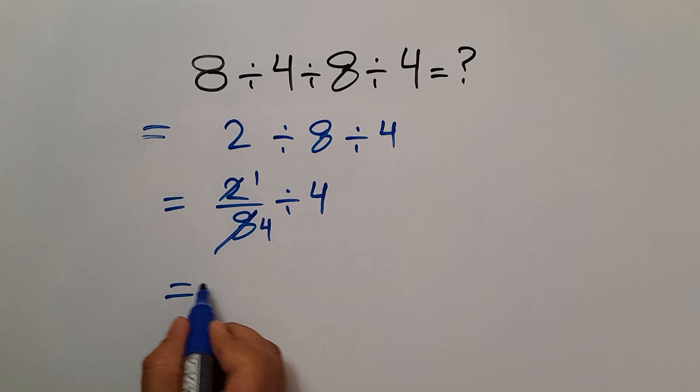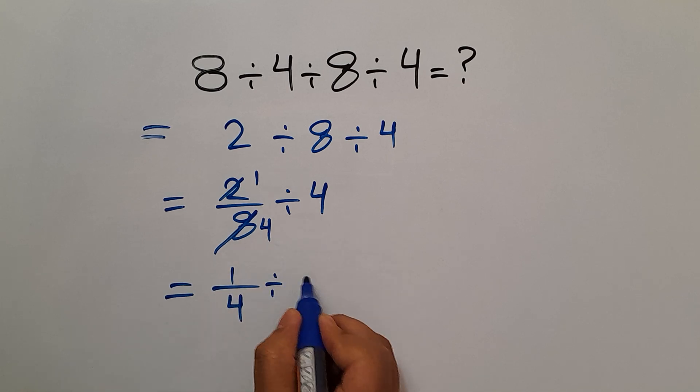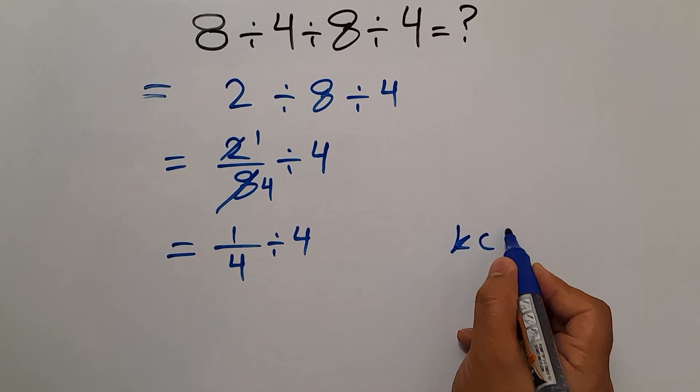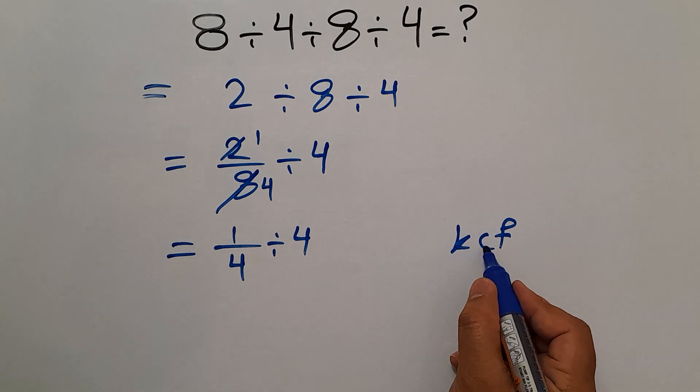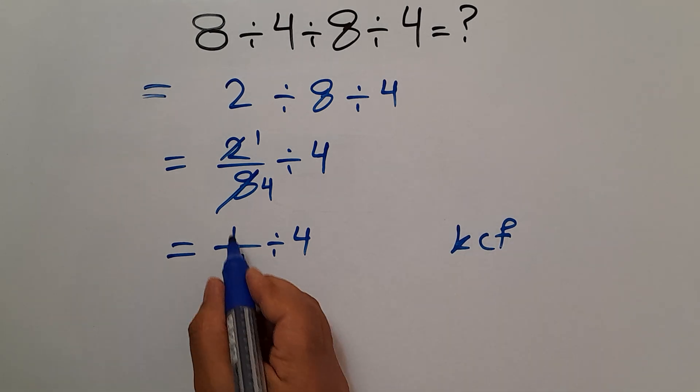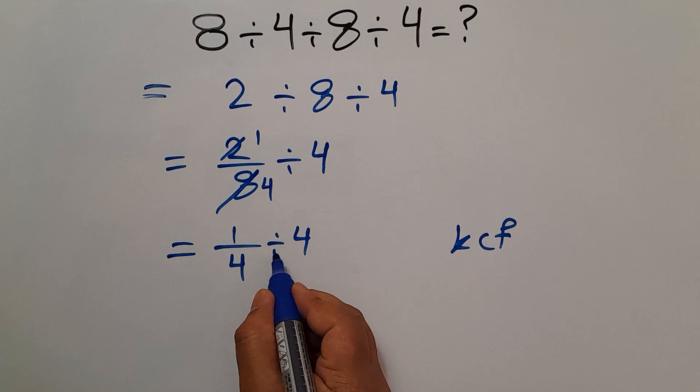So we have 1 over 4, then divided by 4. Now, according to the KCF rule: K stands for keep, C stands for change, and F stands for flip. Keep the first fraction, change division to multiplication.